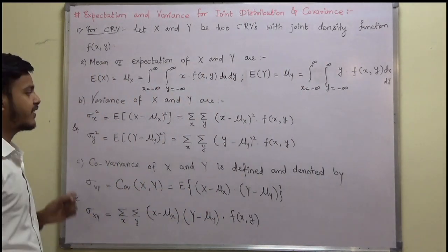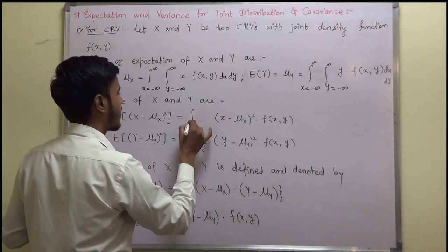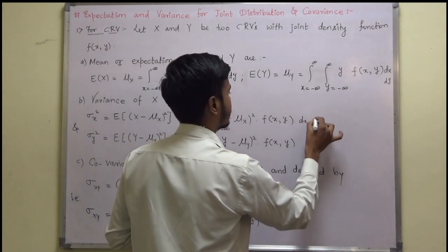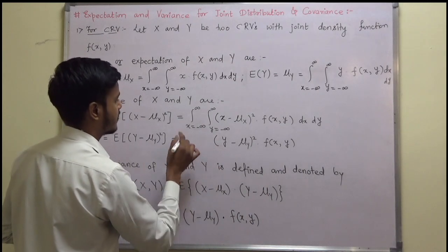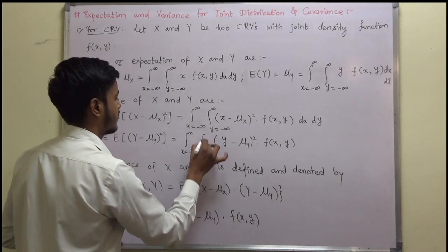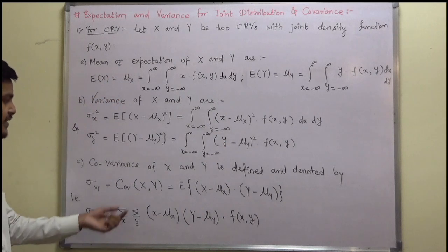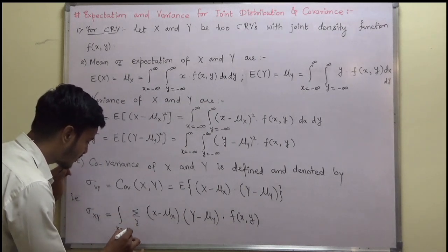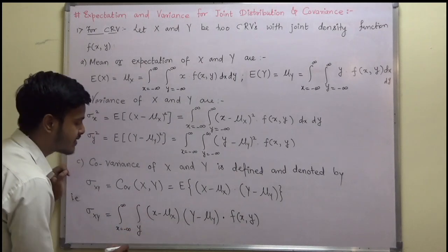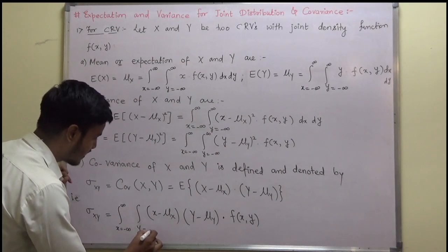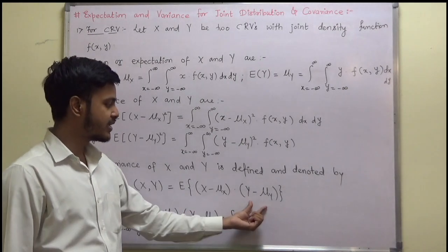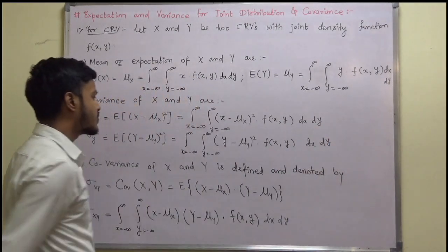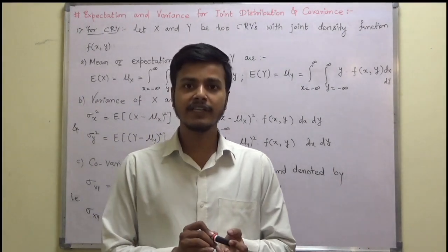Similarly, you can define the variance — just replace summation by integration. And likewise, you can define the covariance. Covariance of random variables x and y is defined and denoted by sigma x y, that is cov of x, y, and is given by expectation of (x minus mu x) times (y minus mu y), which is written as a double integral with dx dy. These are the definitions for discrete and continuous random variables under joint distribution, covering variance, mean, and covariance.